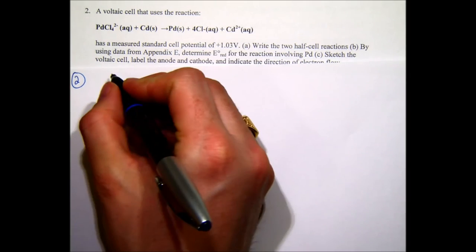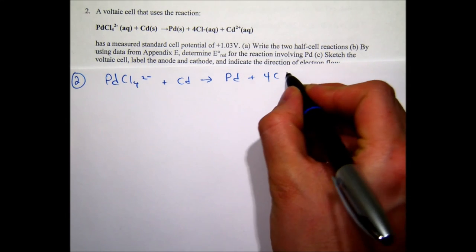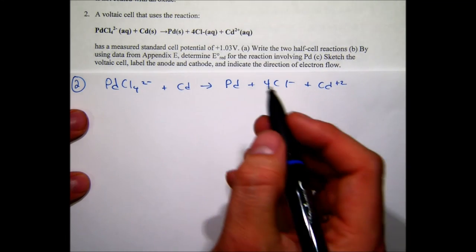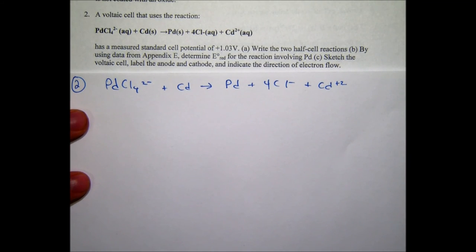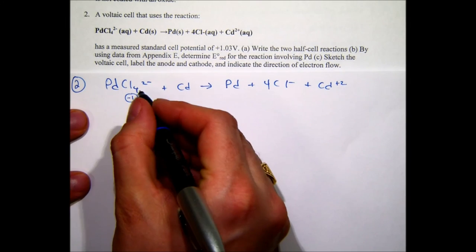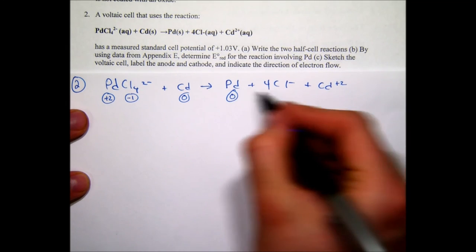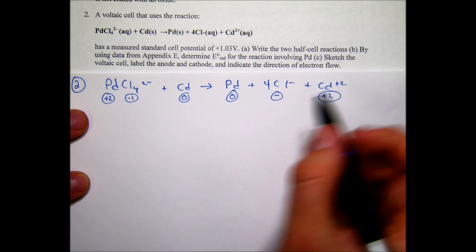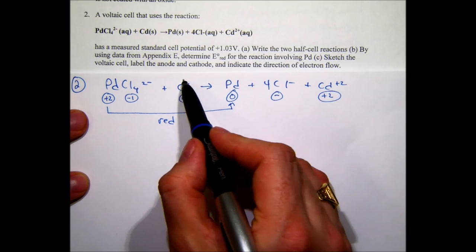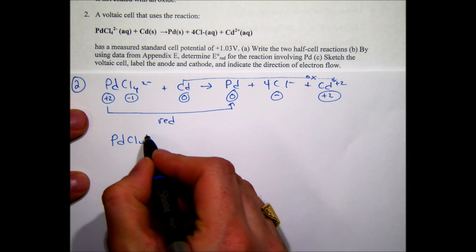Question two involves the reaction: PdCl₄²⁻ + Cd(s) → Pd(s) + 4Cl⁻(aq) + Cd²⁺(aq). We determine oxidation states: chloride is always −1, so 4×(−1) = −4; the overall charge is −2, so palladium must be +2. Cadmium is zero, palladium is zero on the products side, chloride is −1, and cadmium is +2. Palladium goes from +2 to 0 — it's being reduced. Cadmium goes from 0 to +2 — it's being oxidized.